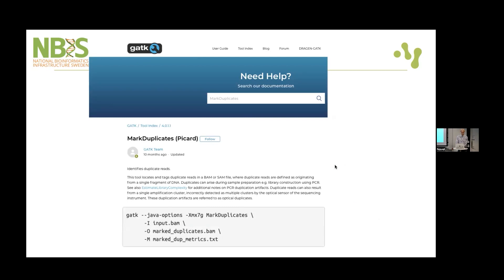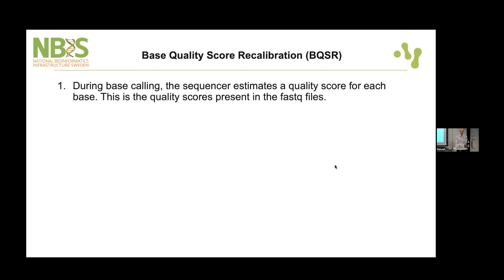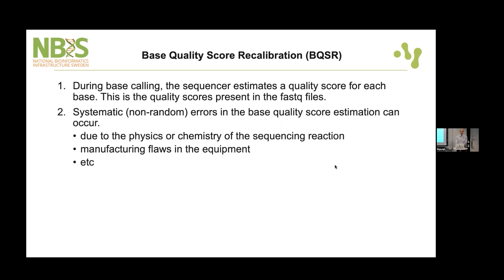That is a fairly simple step that results in a new BAM file from which you then carry on. The next step is recalibration of base quality scores — the scores we looked into earlier. These are estimates from the sequencing experiment representing the probability of base quality scores being wrong. Now that we have aligned our reads to the reference genome, we can actually improve those estimates to be more accurate, so we add that step to avoid some bias in downstream variant calling steps.